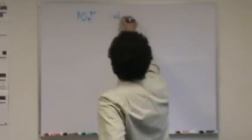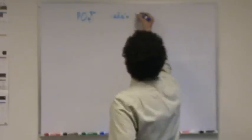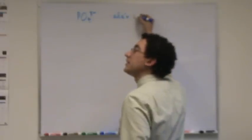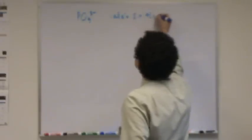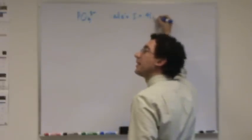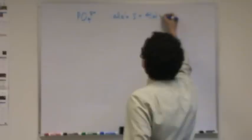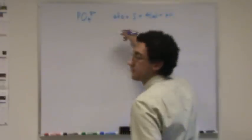So you go valence electrons equals phosphorus is 5, 4 oxygens at 6, plus 3 because there's minus 3 charge. So that's 24 plus another 8, 32.